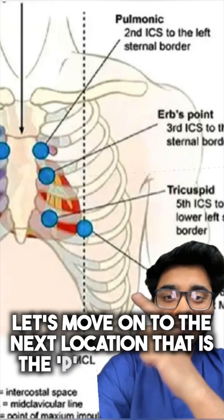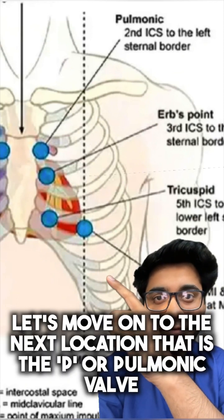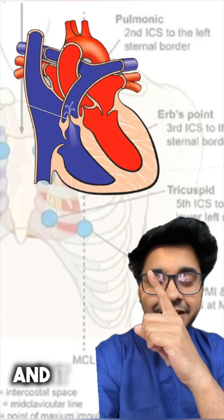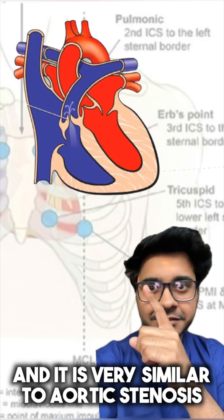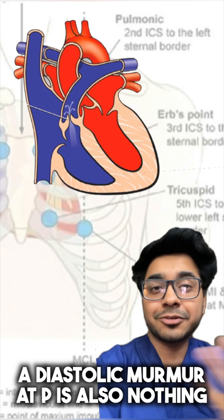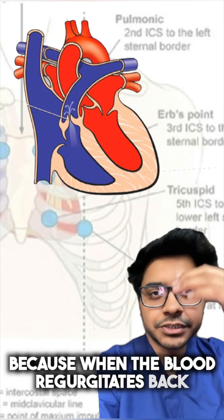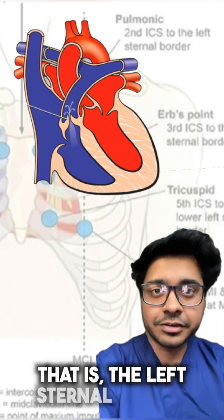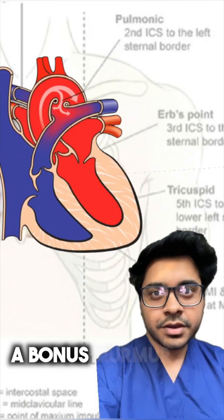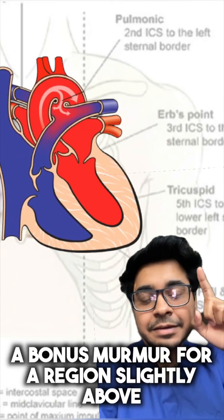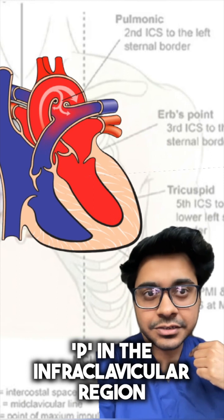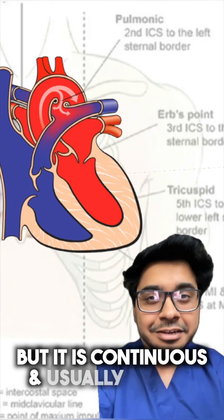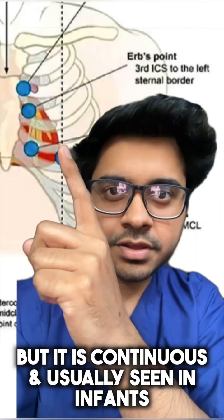Moving to the pulmonic valve: a systolic murmur loudest at P will be pulmonic stenosis, very similar to aortic stenosis. A diastolic murmur at P is also nothing because when blood regurgitates back from the pulmonic valve, it hits the left sternal border below. A bonus murmur slightly above P in the infraclavicular region is the PDA murmur, or patent ductus arteriosus — it is continuous and usually seen in infants.